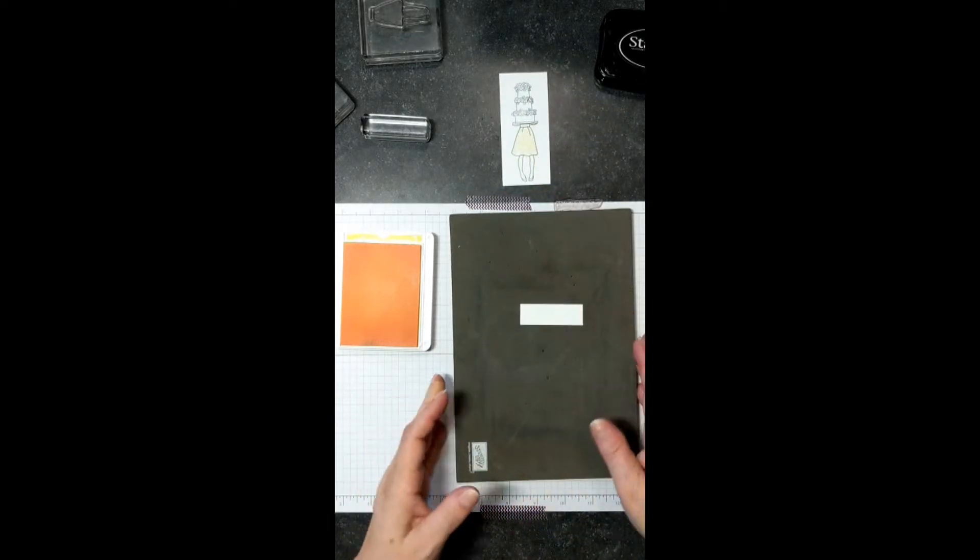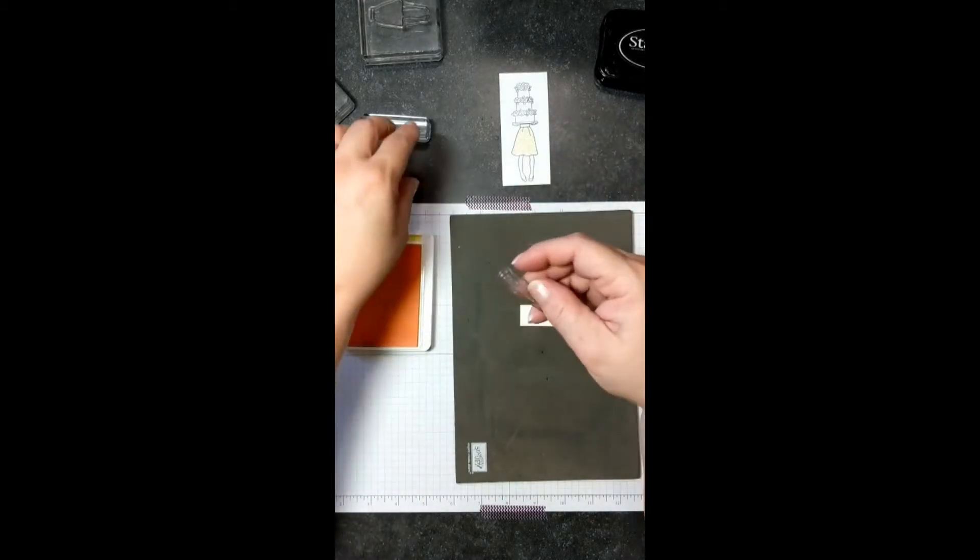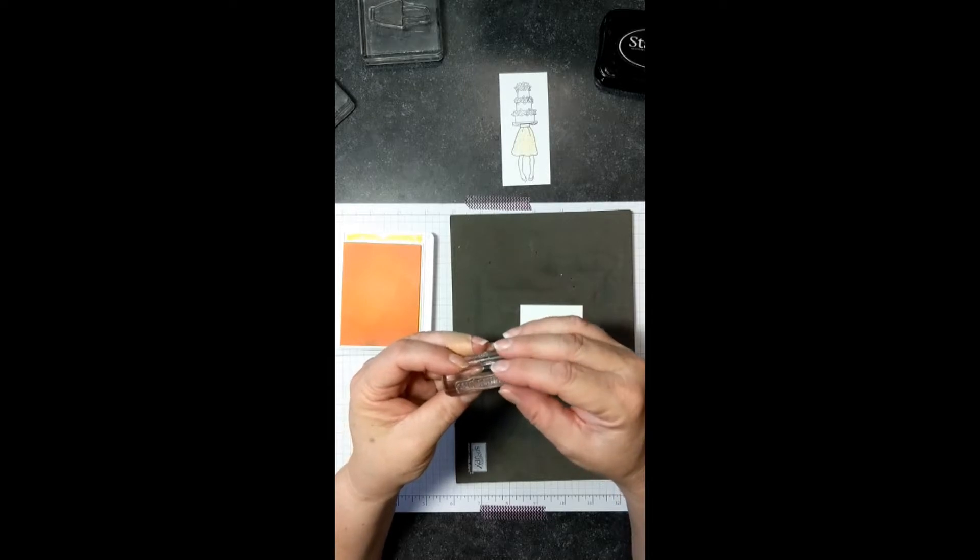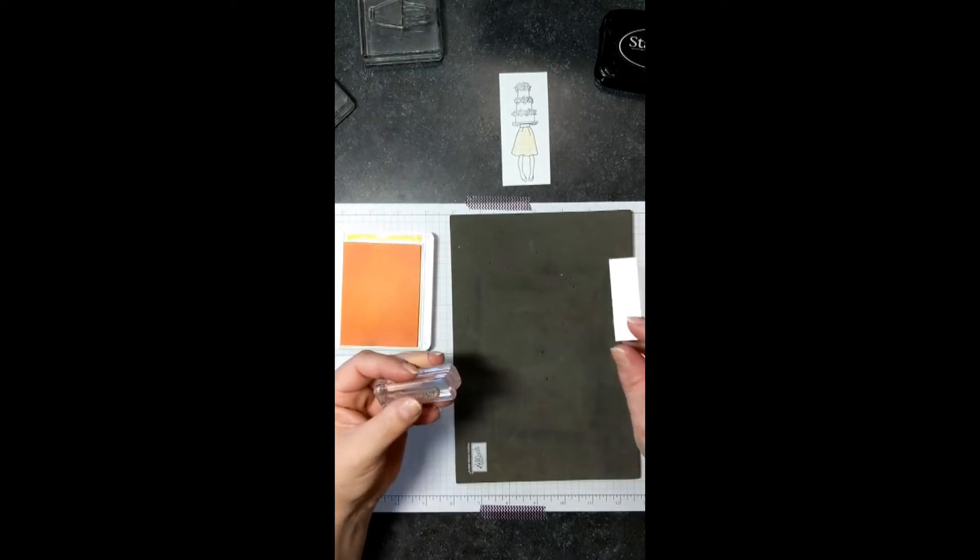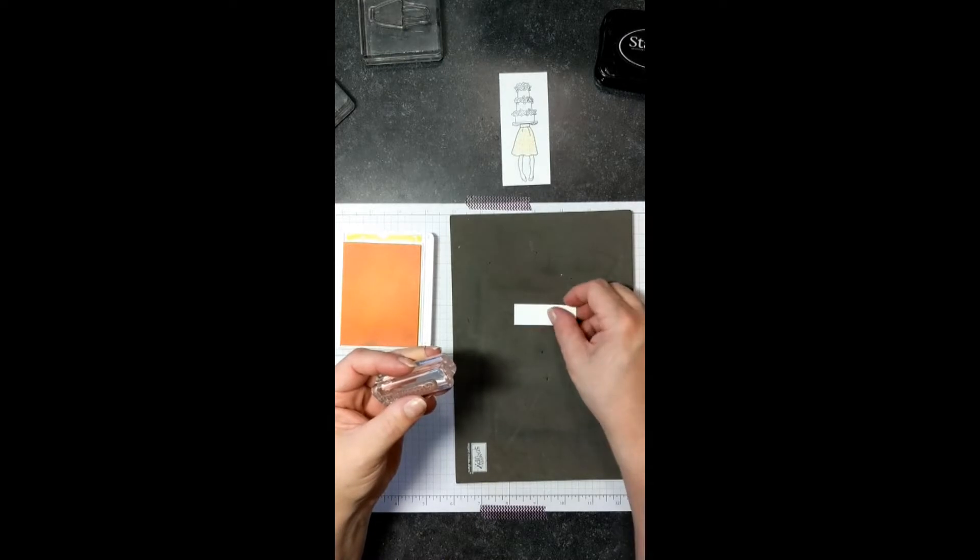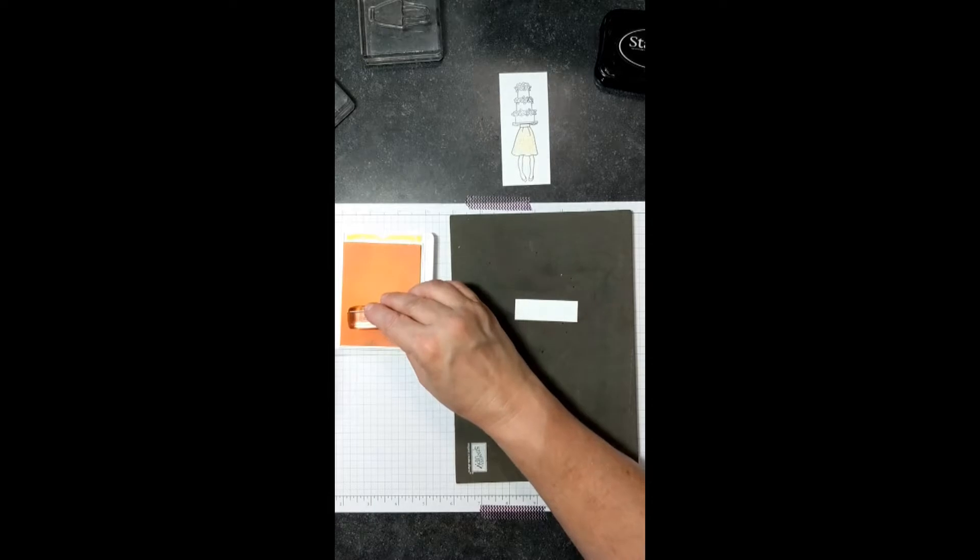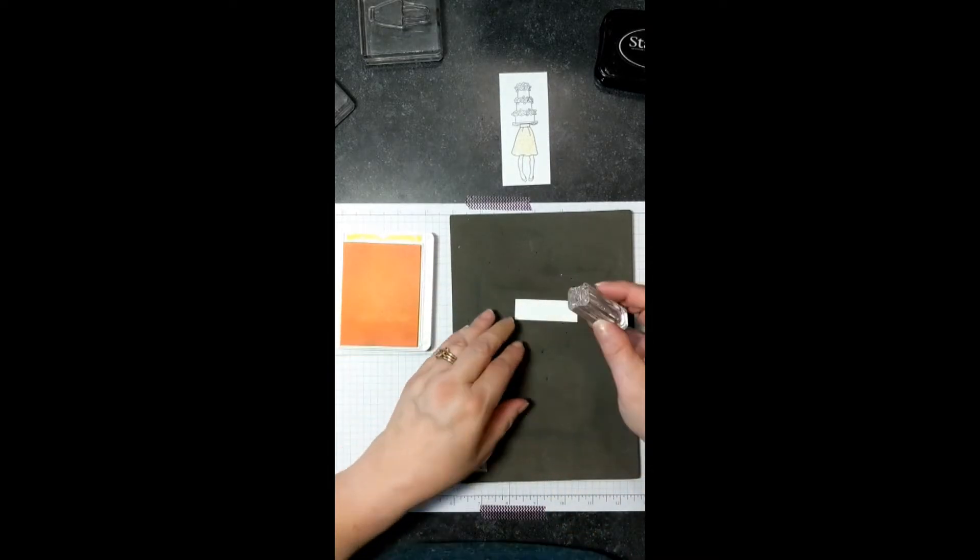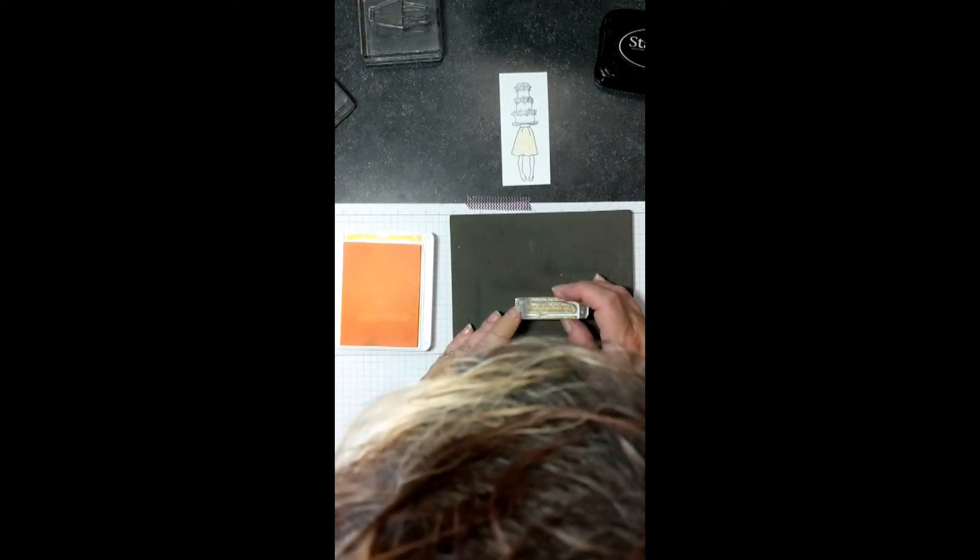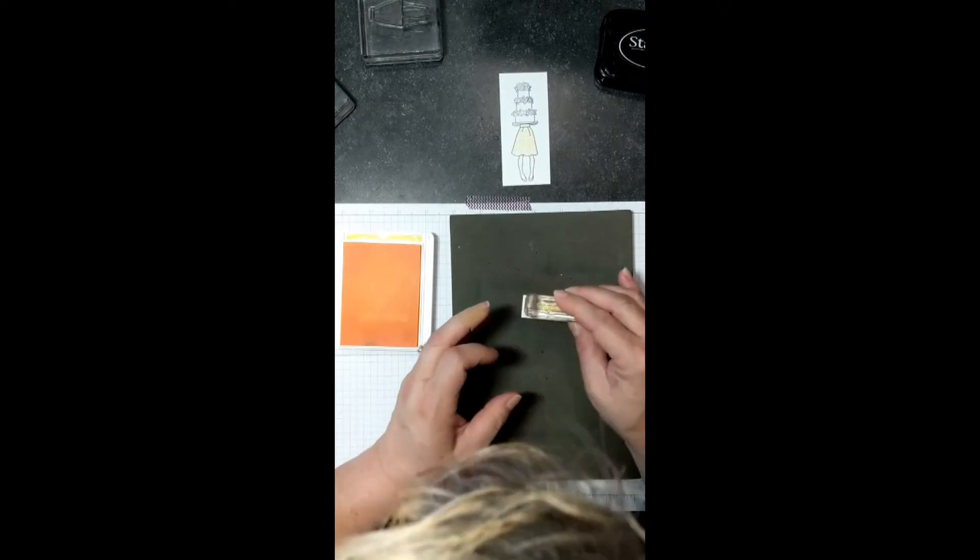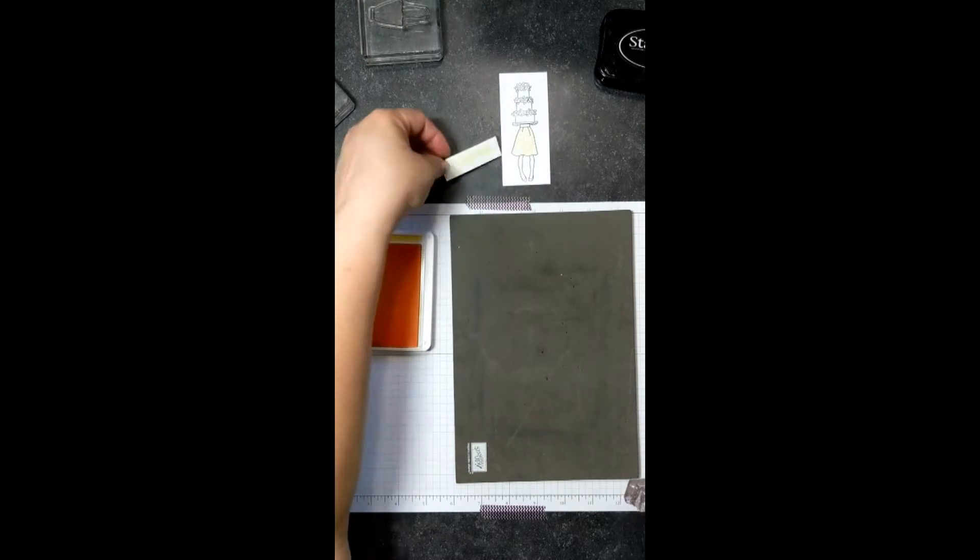So we want to pull out our Congratulations stamp, and we are going to stamp our sentiment onto this strip of paper. It's three quarters of an inch by two and one quarter inch. And we're going to use the Pineapple Punch. Again, inking that up nicely. And just give it a press down here. I'm going to go towards the side a little bit so I can make that a pennant. So we've got our congratulations.